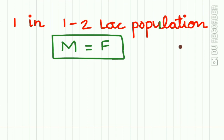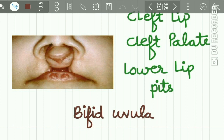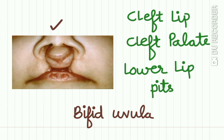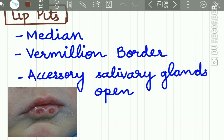Van der Woude Syndrome occurs in 1 to 2 per lakh of population, and males and females are equally affected. The features, as seen in this picture, are cleft lip involving the cleft palate, and there are pits at the lower lip. Bifid uvula is also found in some cases.